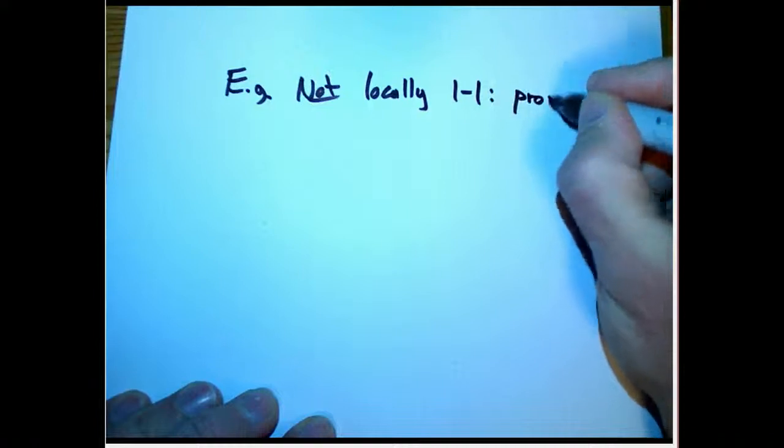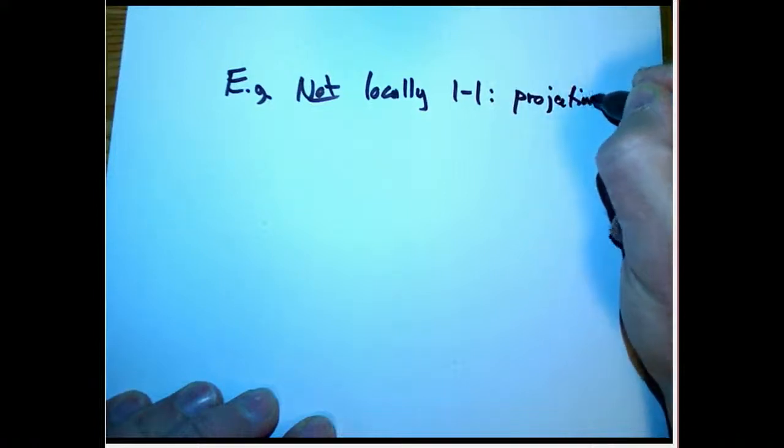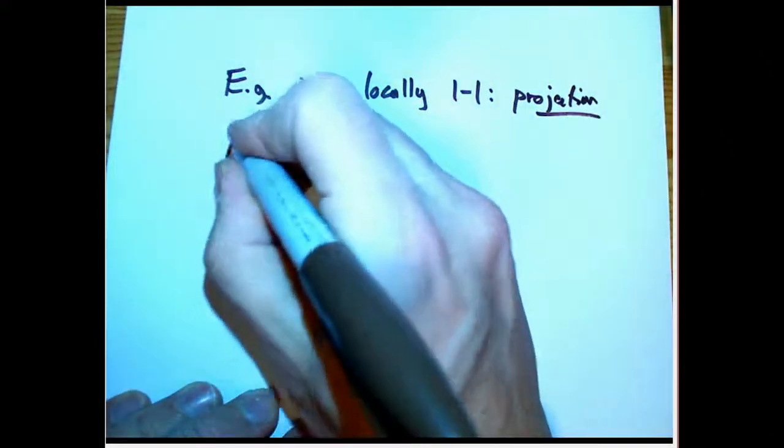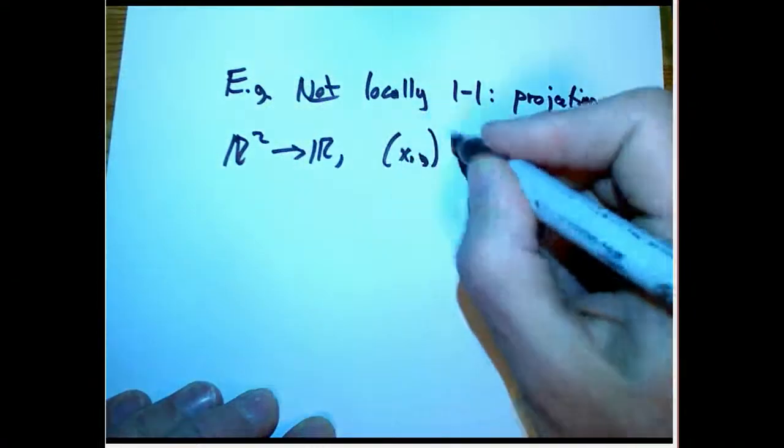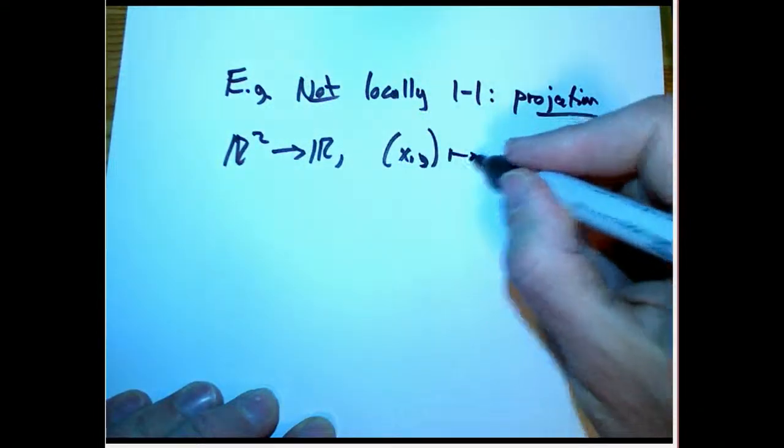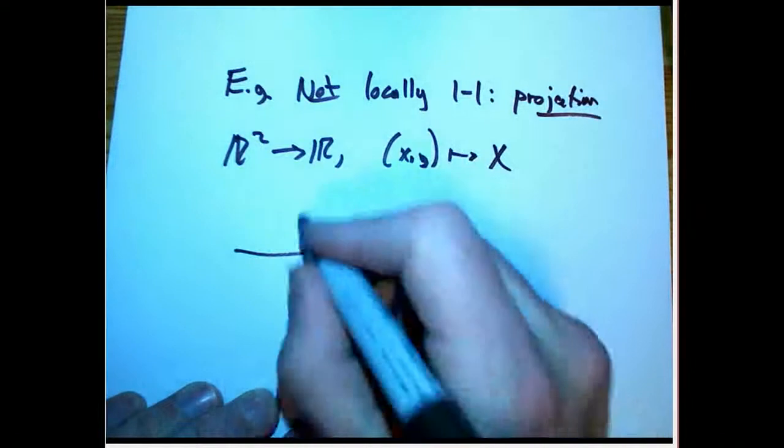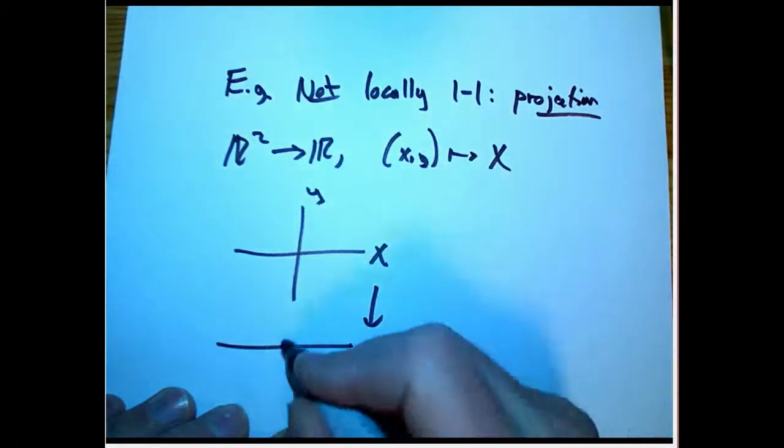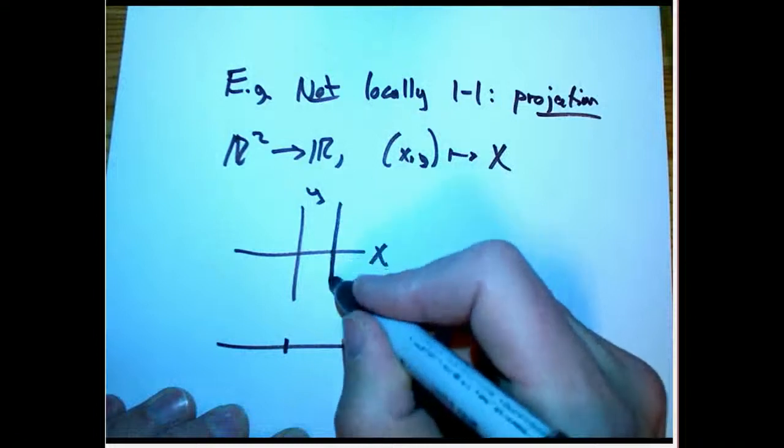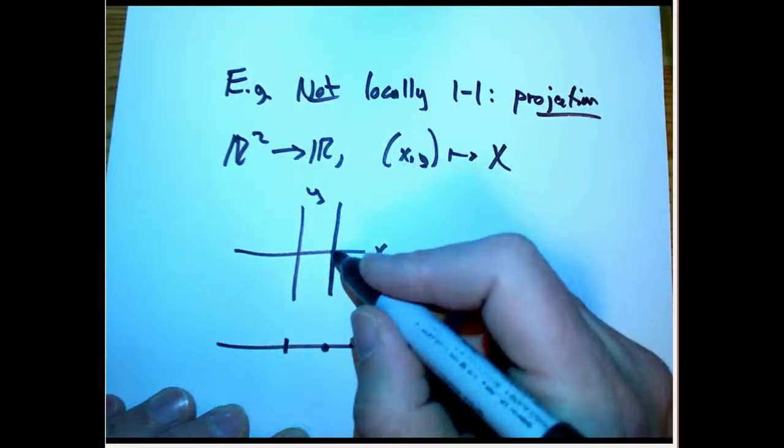Something that's not locally one-to-one is any kind of projection, or, you know, almost any kind of projection map. So, for example, R^2 to R, (x,y) goes to x. So, just project down from the XY plane onto the X axis. Then,